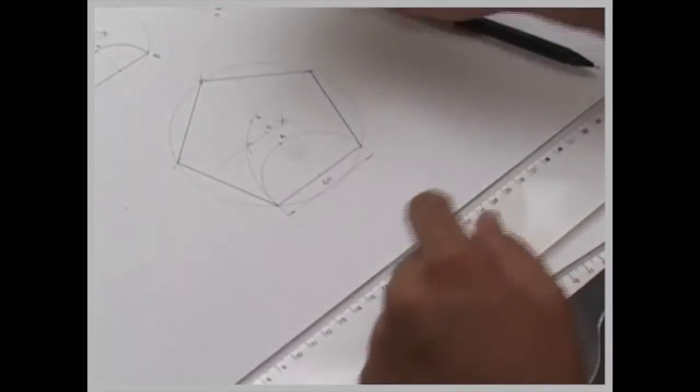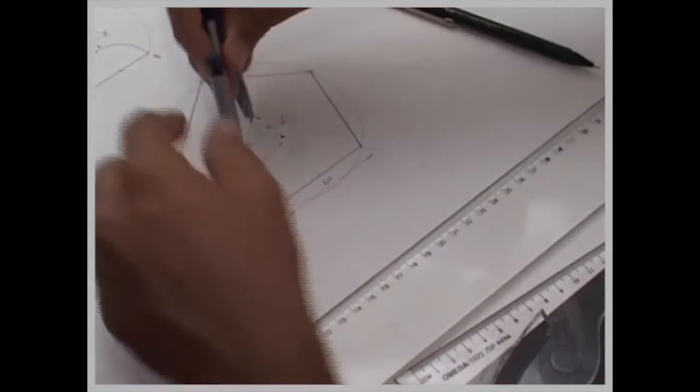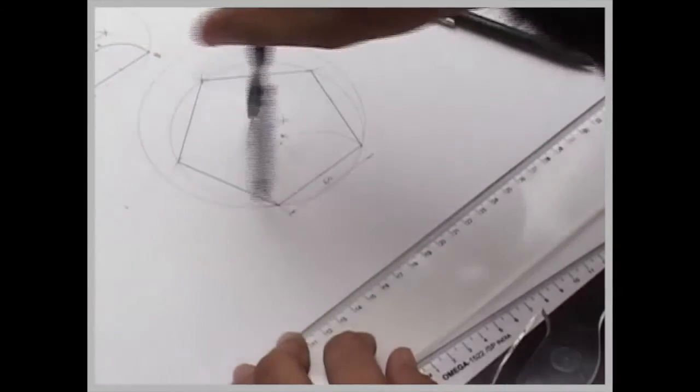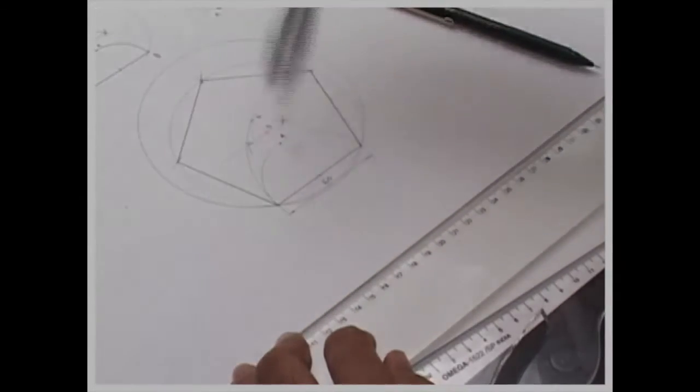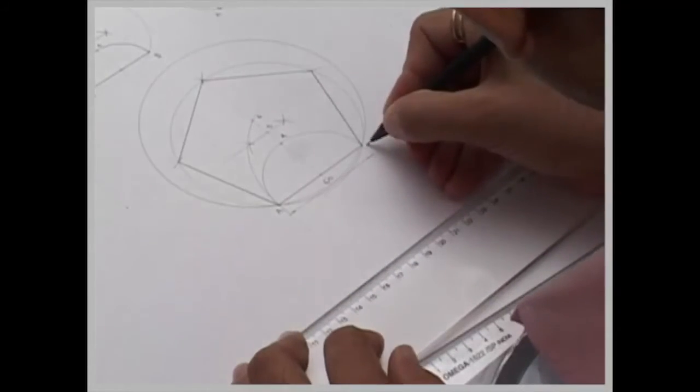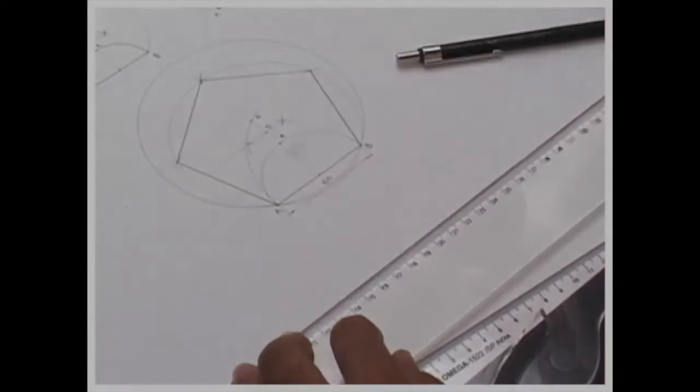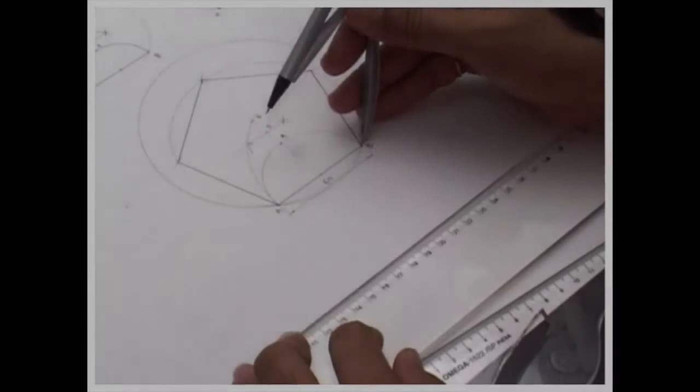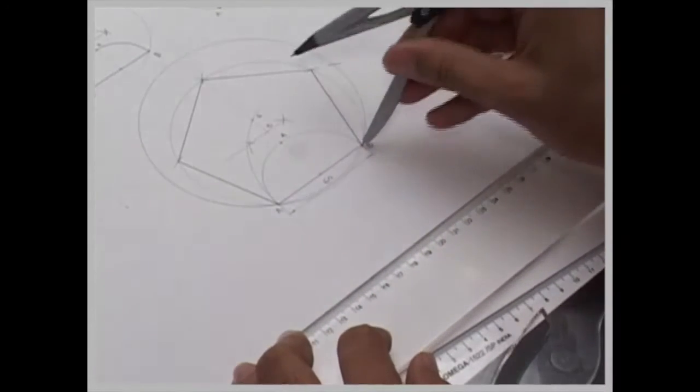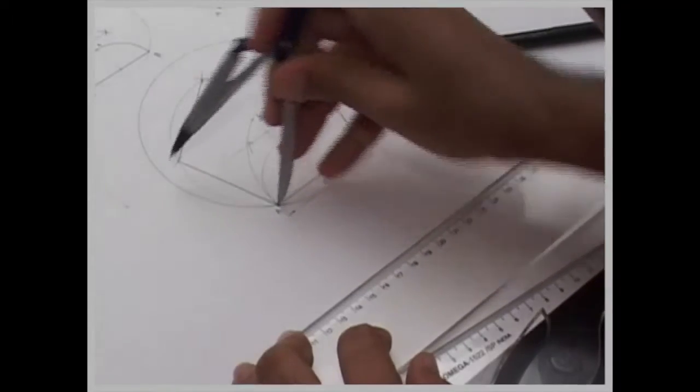What I have to do, I have to take 6 to a and draw a circle. Then you take a to b, cut on right hand side, as well as left hand side.